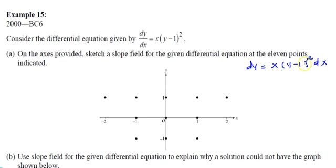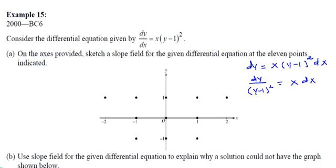First, separate the variables: dy = x(y-1)² dx. Divide both sides by (y-1)² to get dy/(y-1)² = x dx. You get one point for separating variables correctly. Next, take the antiderivative — the antiderivative of x is x²/2 + C. We keep C on the x side since C plus C is just another C.